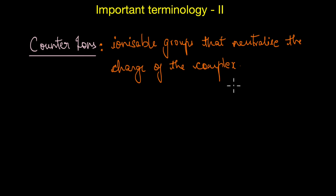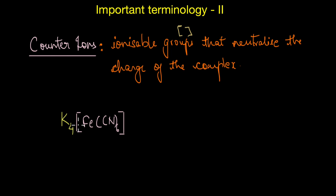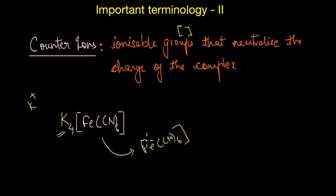Counter ions are the ionizable groups written outside the square brackets which neutralize or balance the charge of the entire complex. For example, in this particular coordination complex, the counter ion is potassium (K⁺). The charge on the complex is [Fe(CN)₆]⁴⁻, so in order to neutralize this charge you will need four potassium ions.